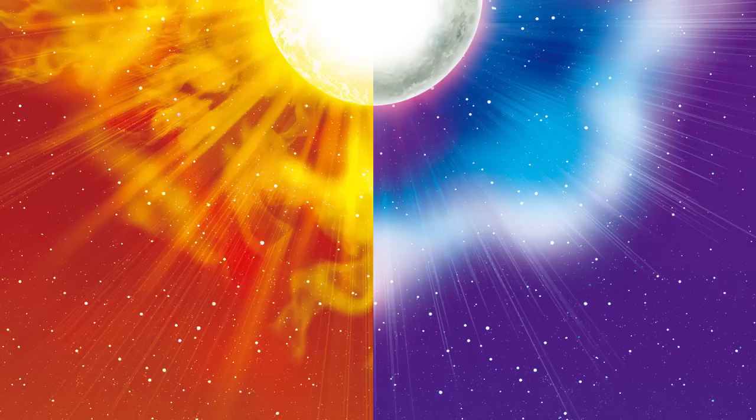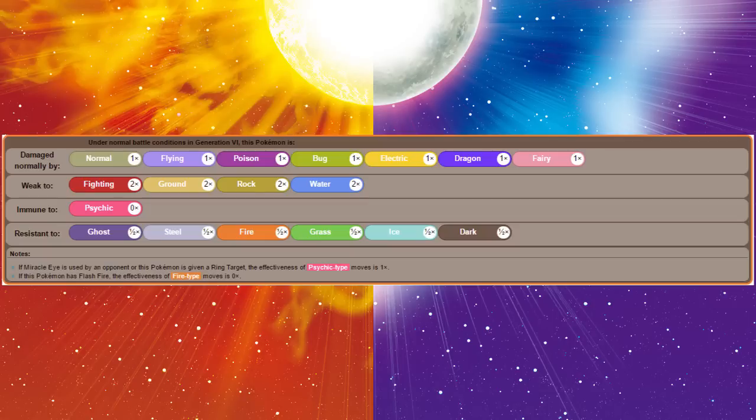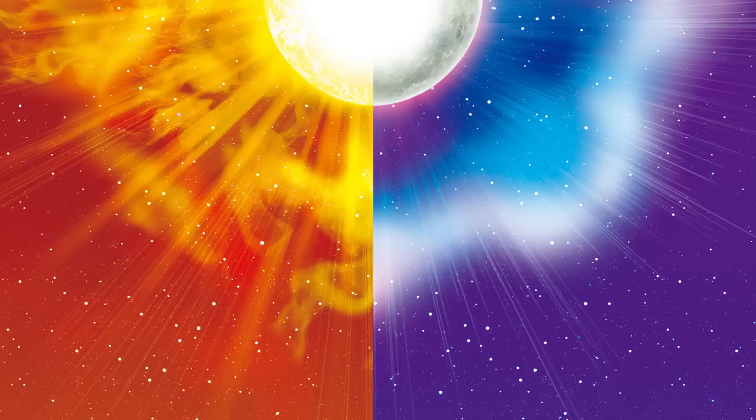But if we go into how much calculation goes into it like not very effective, super effective, neutral, immune, Decidueye actually is the most disadvantageous at this point having 19. You want the lowest number possible because immune being zero, kind of like playing golf here. Incineroar has 18 and Primarina has 17.